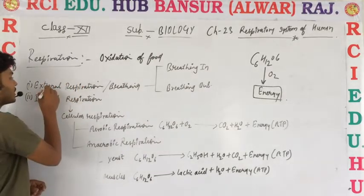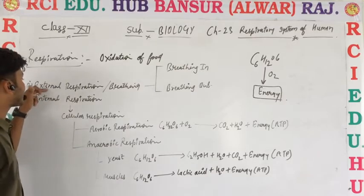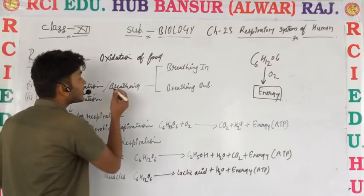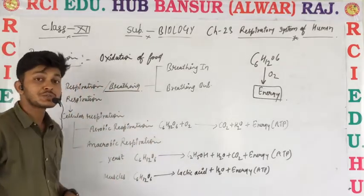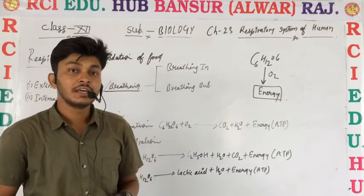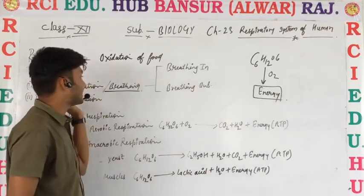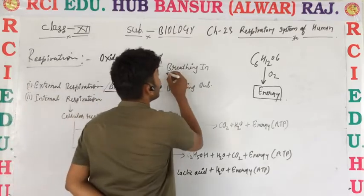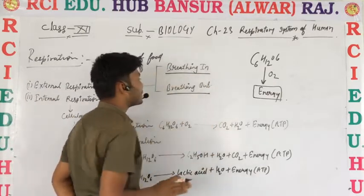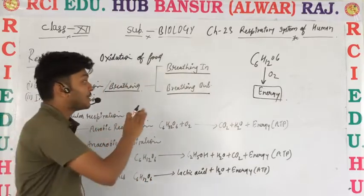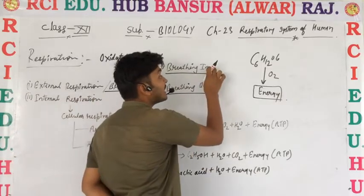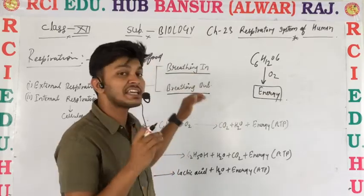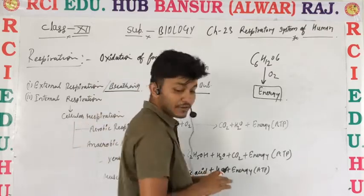There are two types of respiration. Number one is external respiration, and number two is internal respiration. External respiration is also known as breathing or ventilation. External respiration is of two types: number one is breathing in, and number two is breathing out.